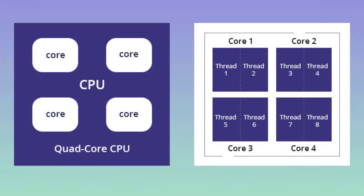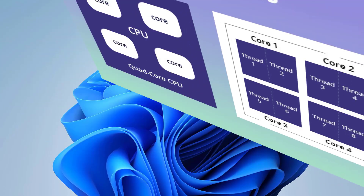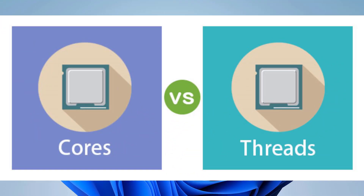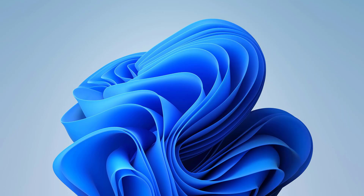The biggest difference between a core and a thread is that cores are physical components while threads are virtual components. Cores increase the amount of work that can be accomplished in a given time, while threads help organize and optimize that workload, resulting in vastly improved system speed and performance.